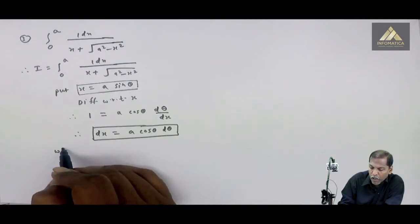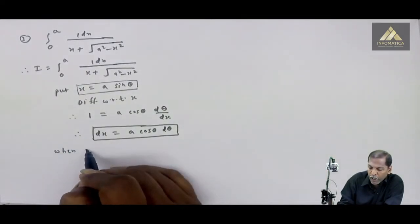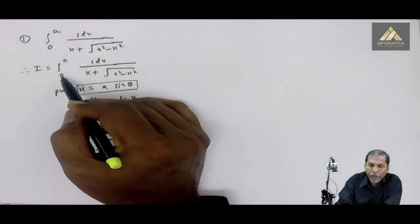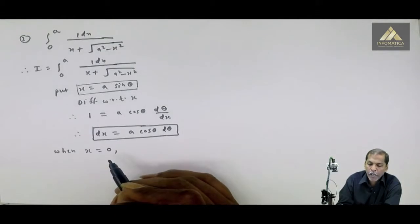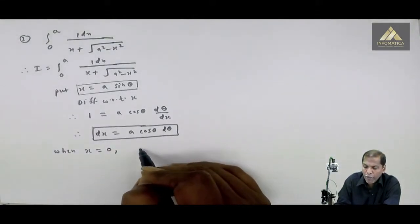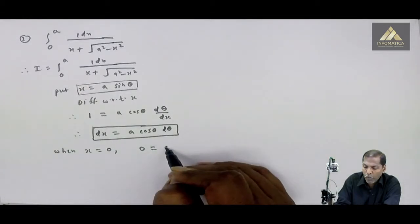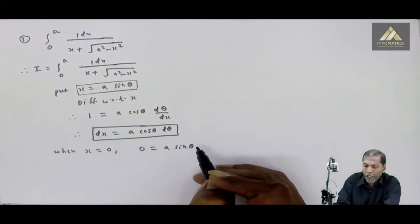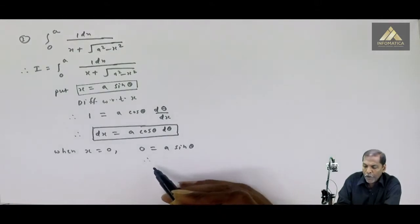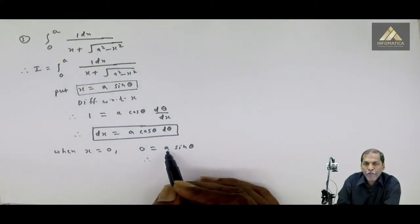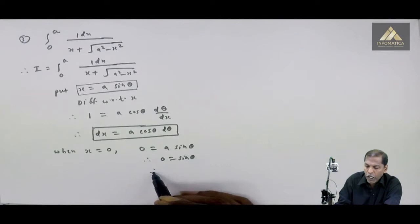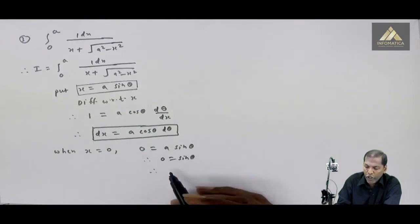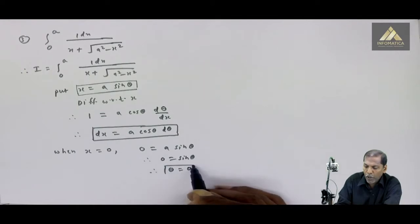Starting with the lower limit: when x equals 0, we replace this value into the substitution, so 0 equals a sin theta. Simplifying, 0 upon a equals sin theta, giving sin theta equal to 0, which means theta equal to 0.